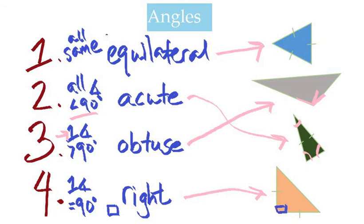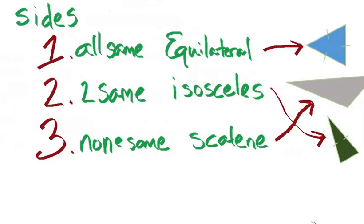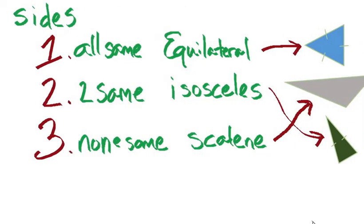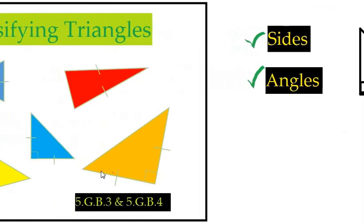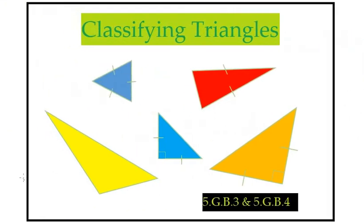Perfect. All right. So how are we doing? Did you get this? We've got an equilateral triangle. We've got sides that we can measure off of. We just looked at the angles that we can measure off of, and that gives us our different kinds of triangles. Good work, everybody.